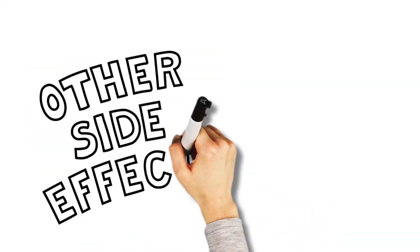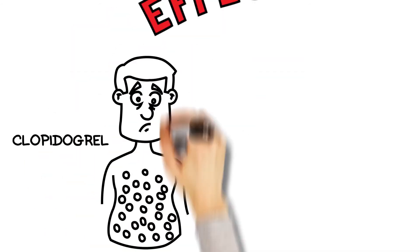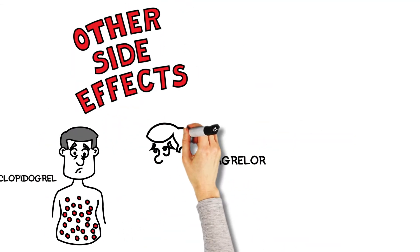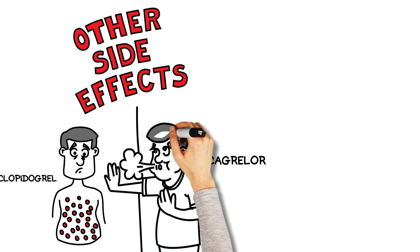There are other potential side effects that should be mentioned. Clopidogrel has a small risk of causing a rash, and Ticagrelor can cause mild shortness of breath.